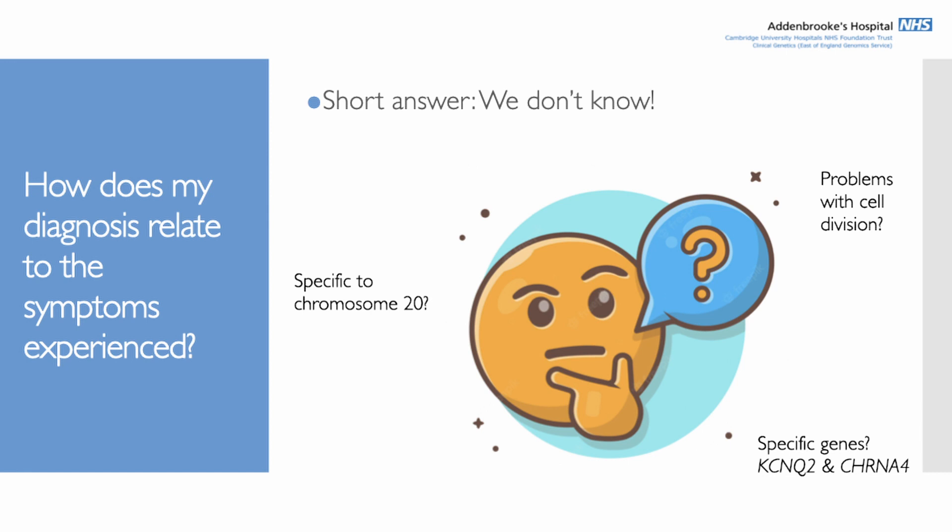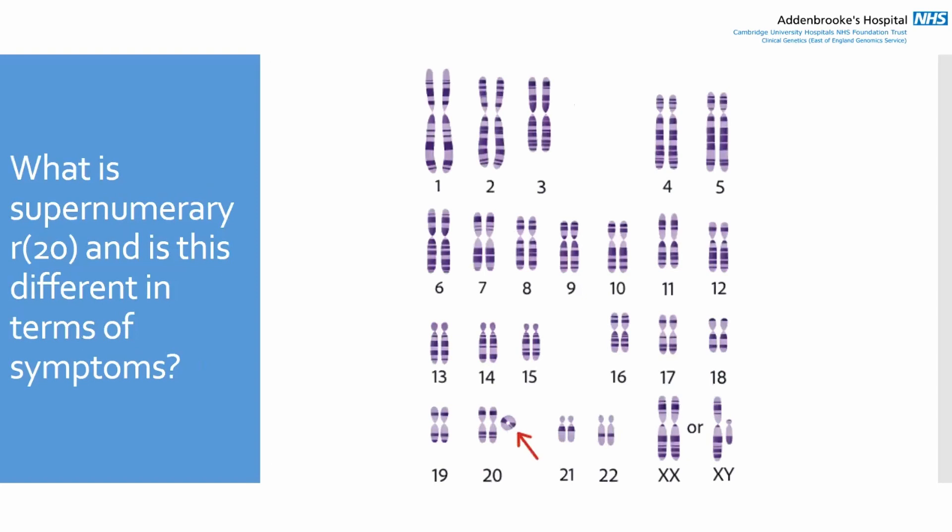It's likely that the symptoms are specific to chromosome 20 rather than generally related to ring chromosomes, because other ring chromosomes don't all have the same symptoms — so it's likely chromosome-specific rather than structure-specific. It may also be related to specific genes that sit on chromosome 20. There are a couple of genes near the tip of the long arm of chromosome 20 that are associated with epilepsy, and if that material is lost when the ring forms — which happens in about one in three cases — the loss of those genes may be contributing to the symptoms.